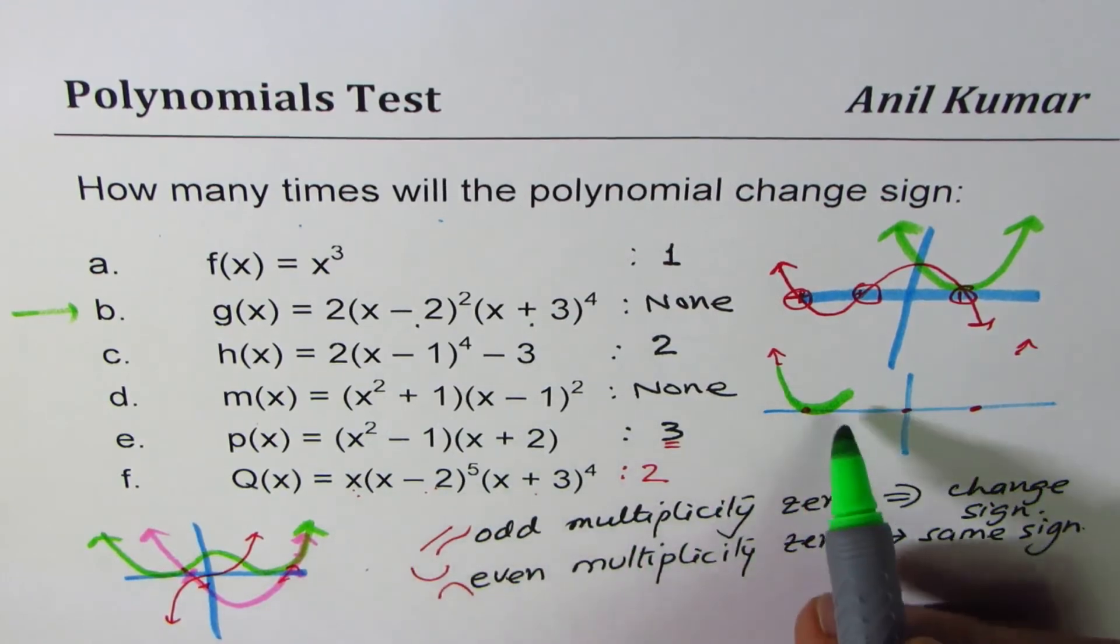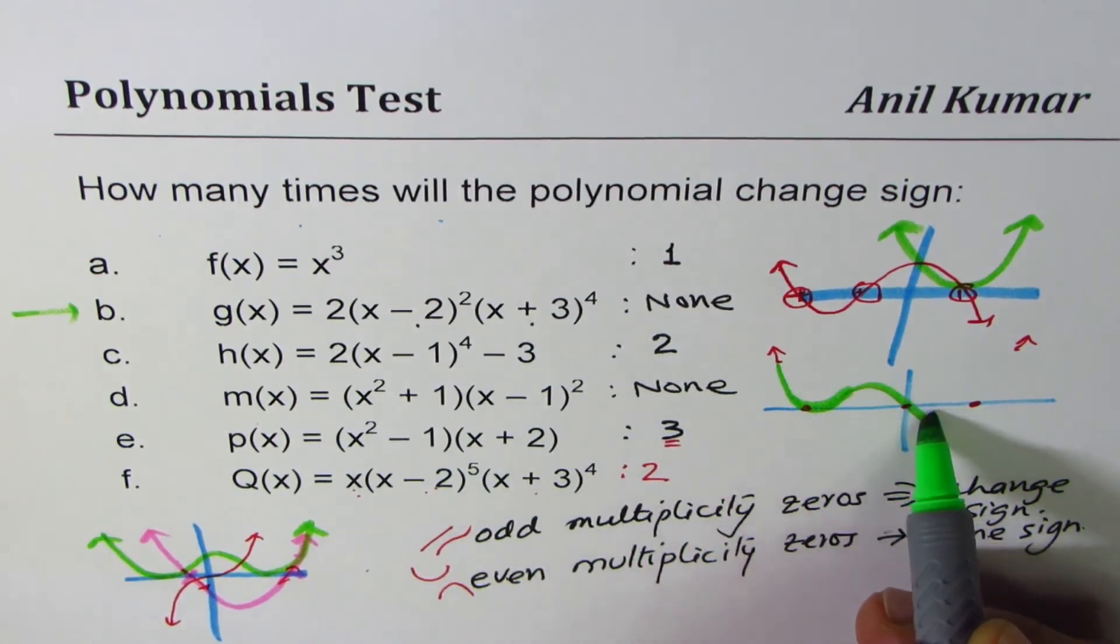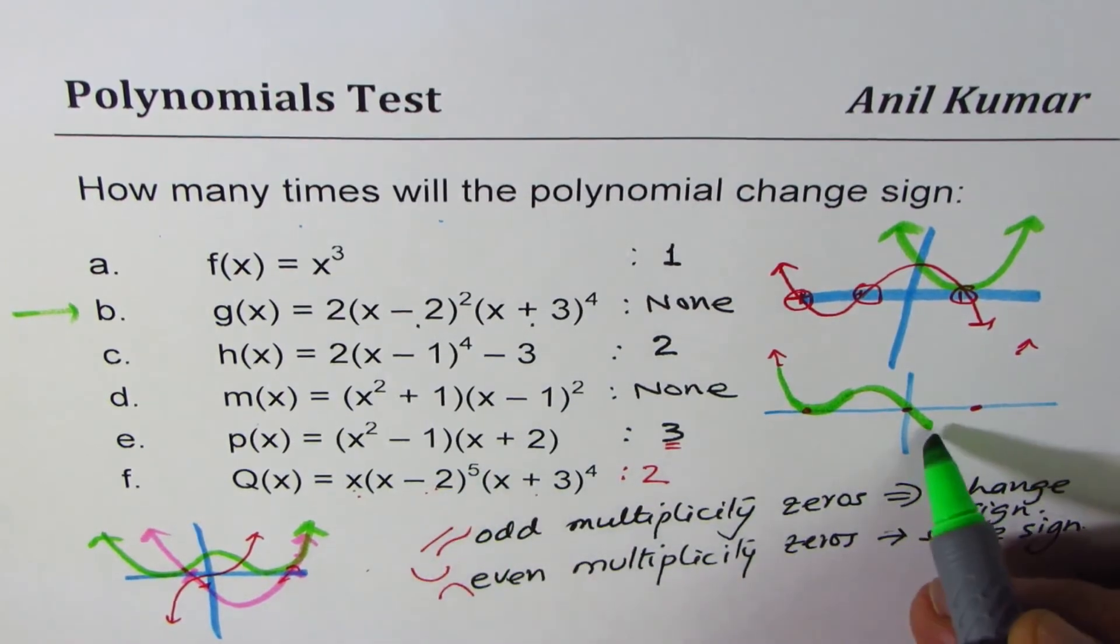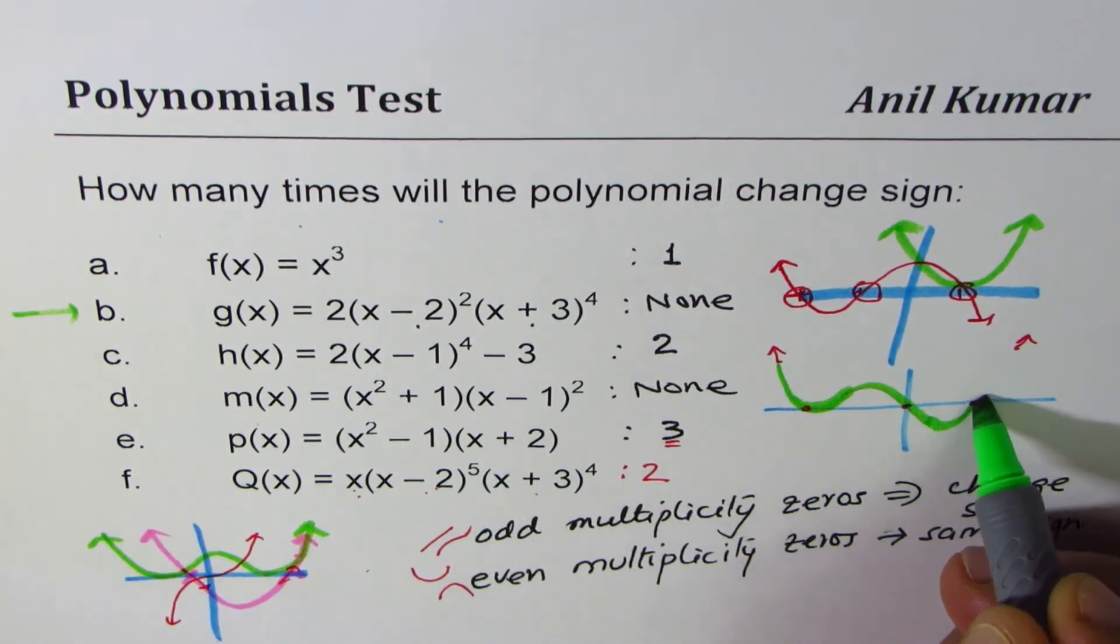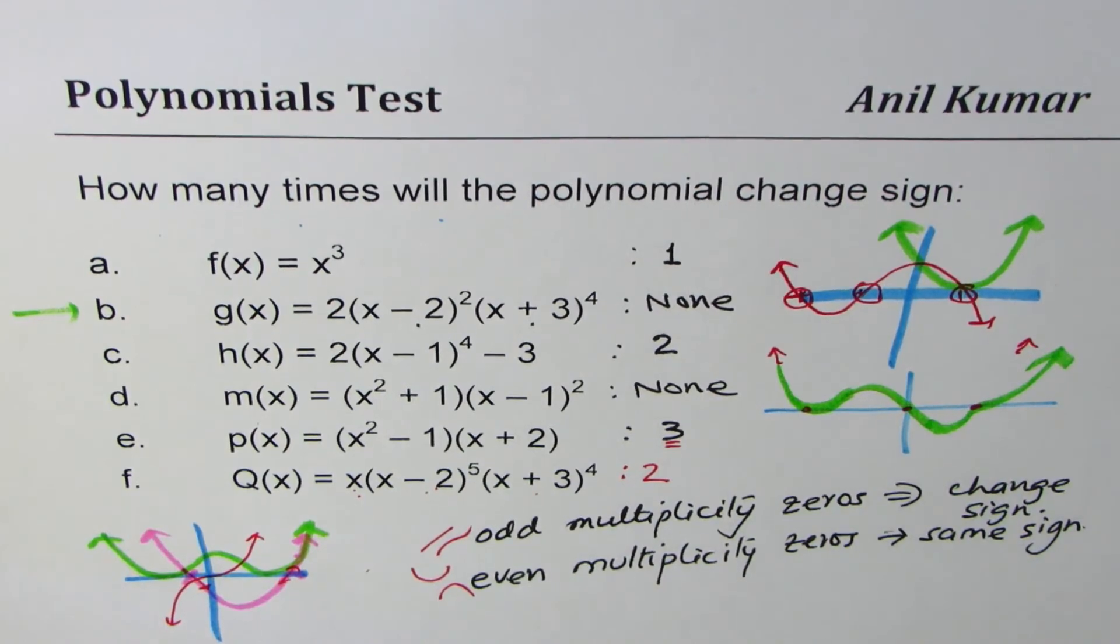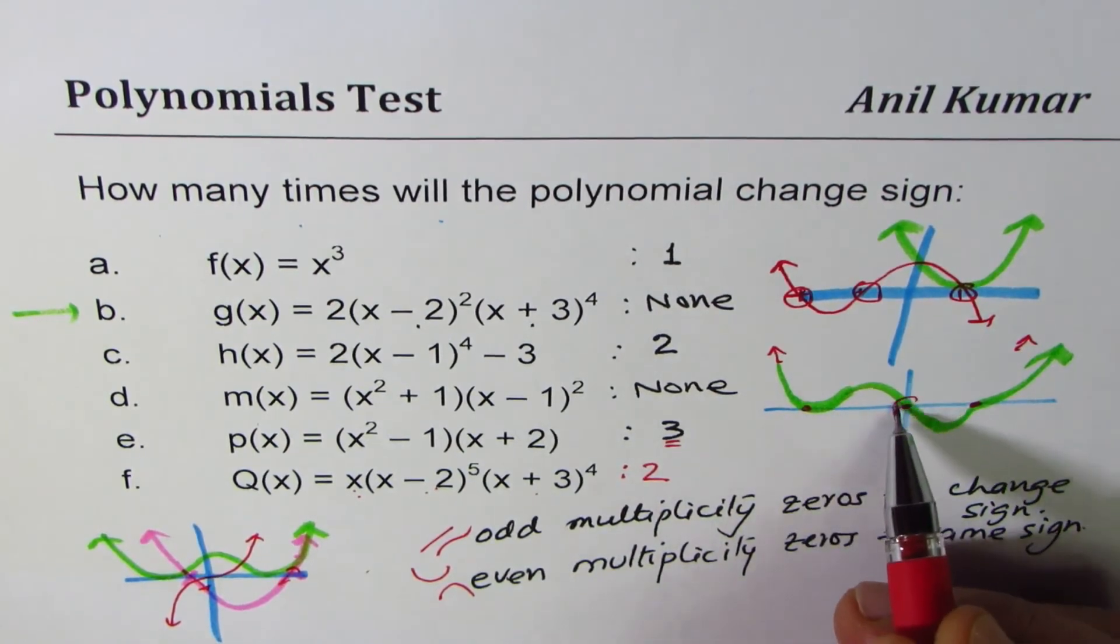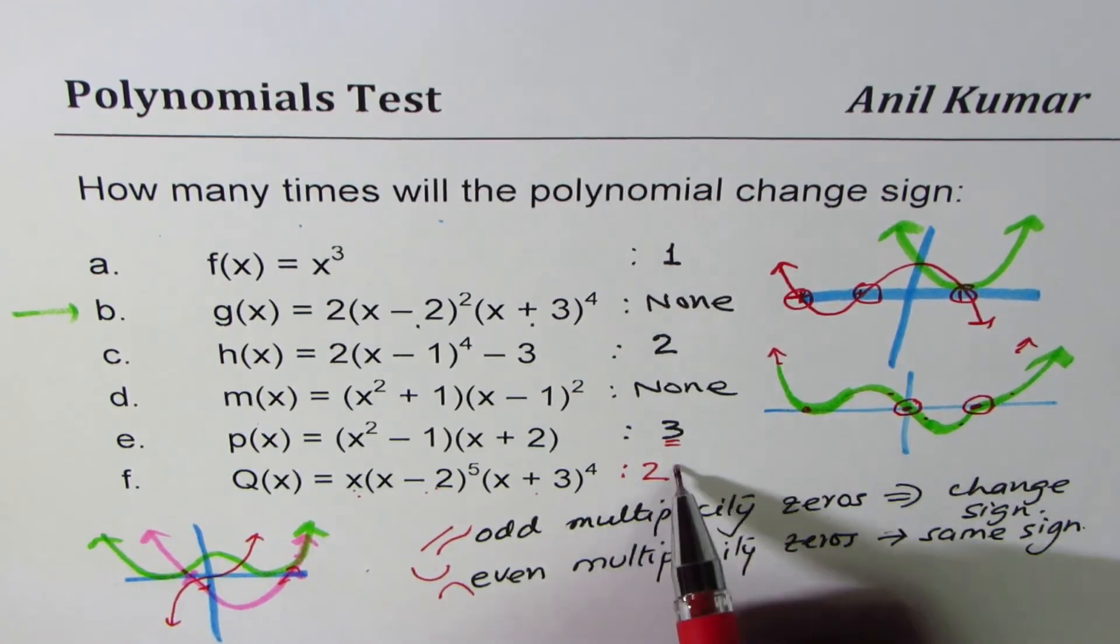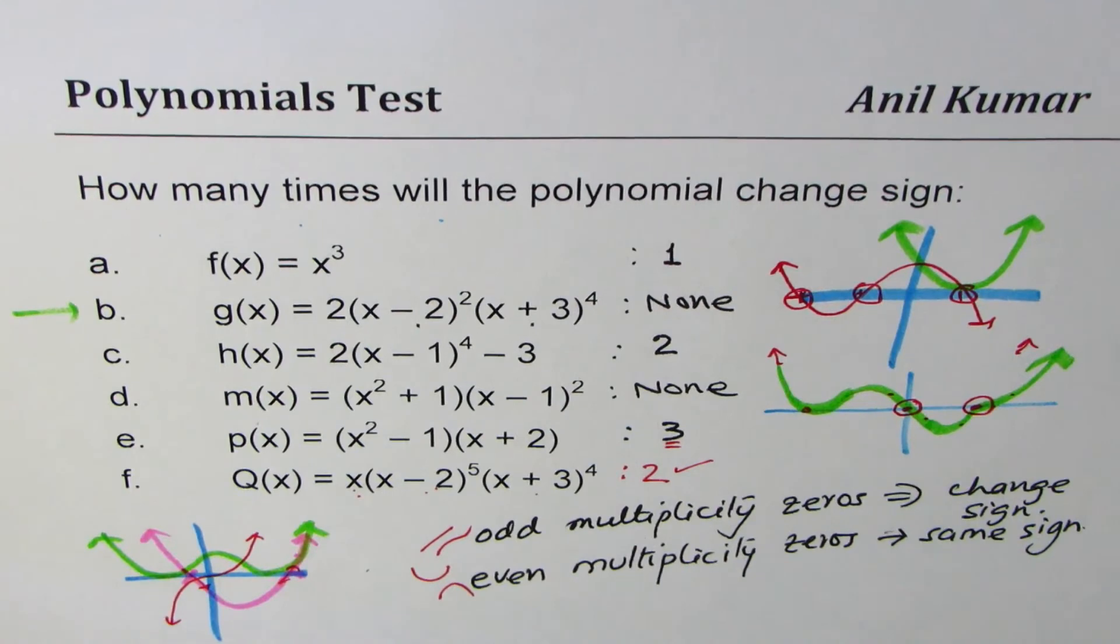Then at x it changes sign, goes down, and here at 5 it will move like this. As you can see very clearly it changes sign once at this place from positive to negative, and then here from negative to positive.